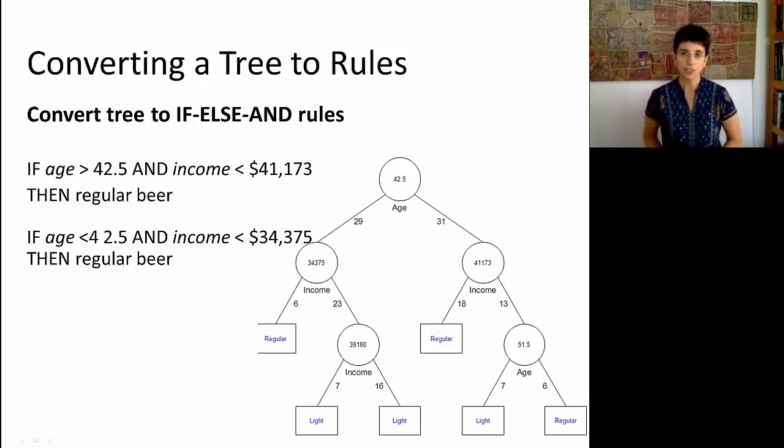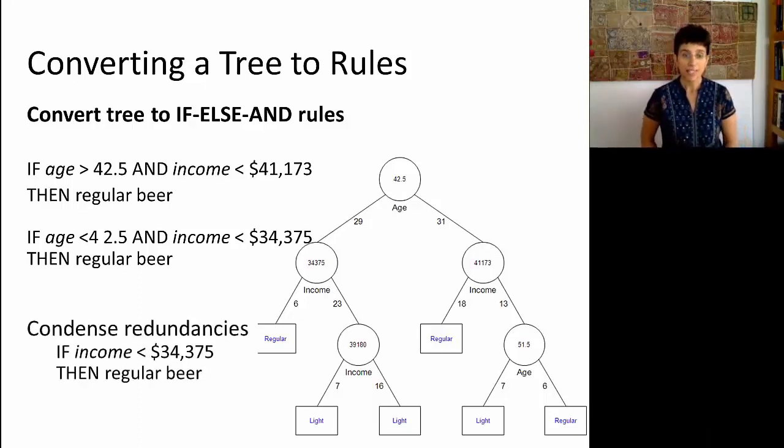Now, you'll notice that by just creating a list of rules based on all the terminal nodes, you might get some redundancies. For example, these two rules that we just looked at can be condensed by saying we don't really care how old you are. If your income is below $34,375 a year, then you're really going to prefer regular beer, because both of these terminal nodes had a label of regular. So there's an extra step that you want to do besides just the mechanical conversion of a terminal leaf into a rule, and that is condensing rules.